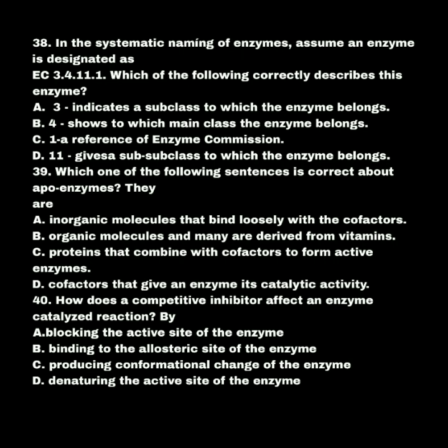In the systematic naming of enzymes, calcium enzyme is designated as EC 3.4.11.1. Which of the following correctly describes this enzyme? A. 3 indicates a subclass to which the enzyme belongs. B. 4 shows to which main class the enzyme belongs. C. 1.1 is a reference of enzyme commission. D. 11 gives service classes to which the enzyme belongs. Answer: A — 3 indicates a subclass to which the enzyme belongs.